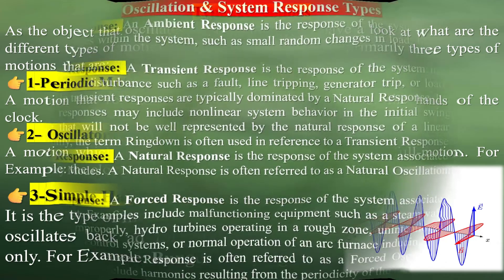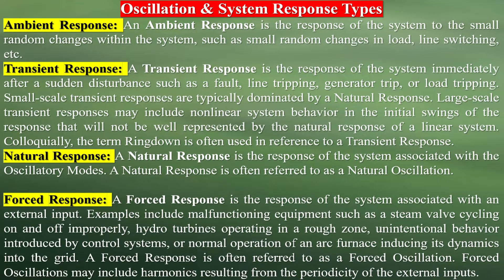Let's discuss system oscillation response types. Ambient oscillation response: ambient oscillations are the system's response to small random disturbances. They are typically caused by electrical loads, which are randomly varying by nature. Ambient-based oscillation mode extraction is an effective means of monitoring the small signal stability of a power system online.